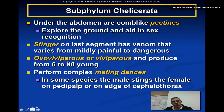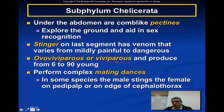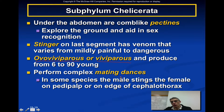Scorpions tend to be either ovoviviparous or viviparous, producing between 6 and 90 young. Ovoviviparous means keeping eggs inside the female — she gives birth to live young that hatch internally with no connection between mother and offspring. Viviparous means there is a connection between mother and offspring, with the mother providing nutrients before birth. Some species perform complex mating dances, and in some the male will sting the female in the pedipalp or on the edge of the cephalothorax as part of courtship.